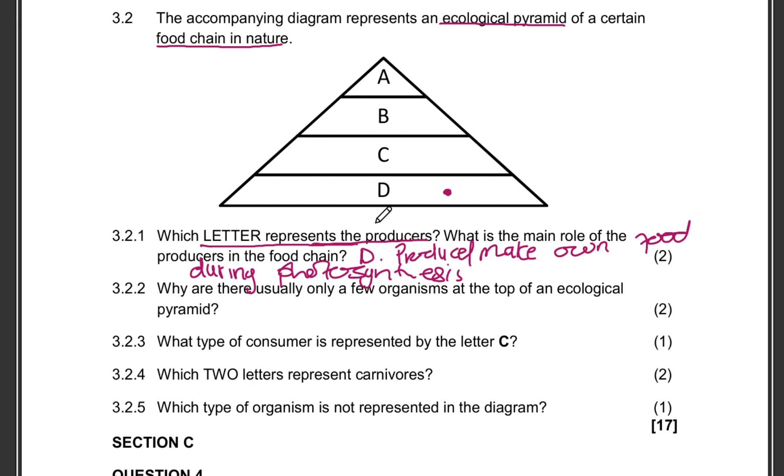Now how we would mark this? You'll get a mark for writing down the letter, and then you'd get the second mark for writing down the main role of the producers in the food chain.